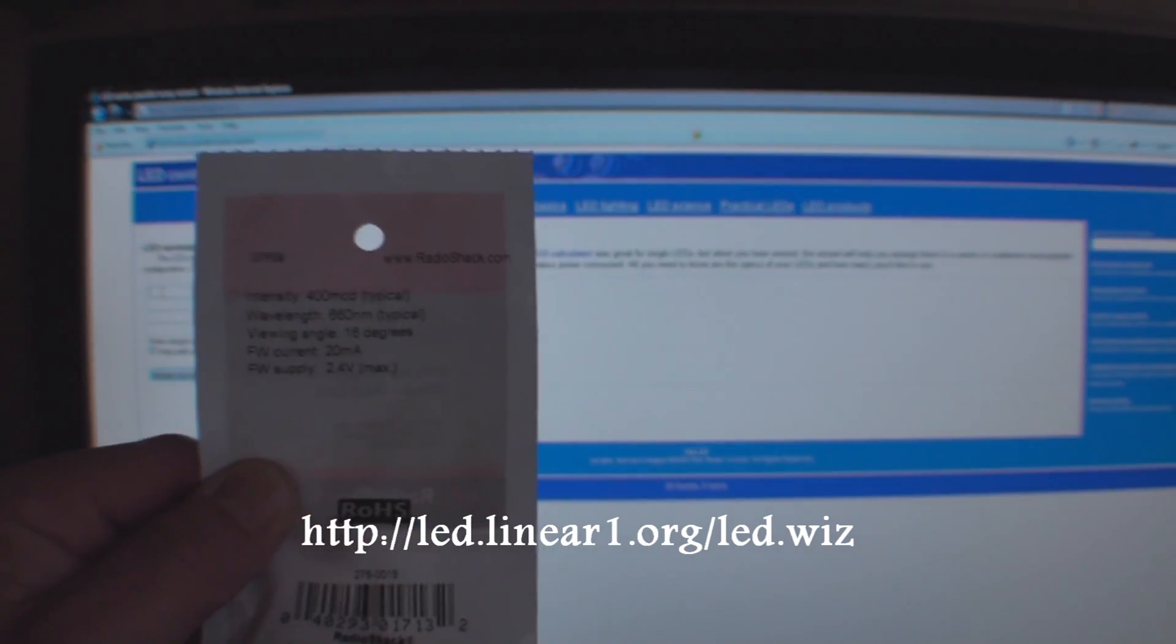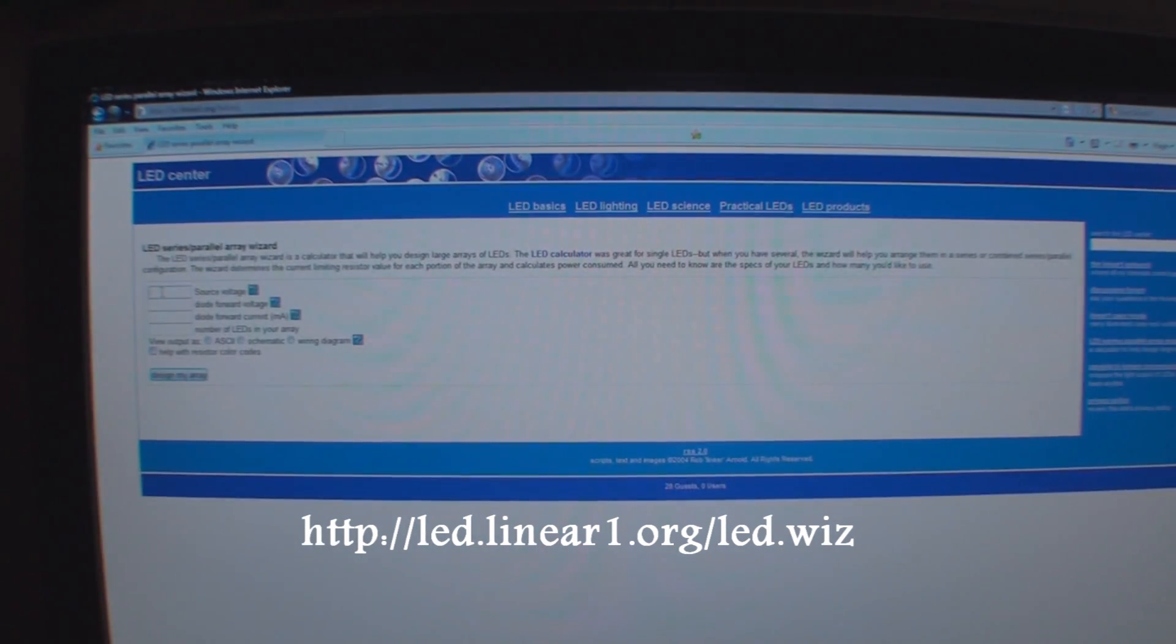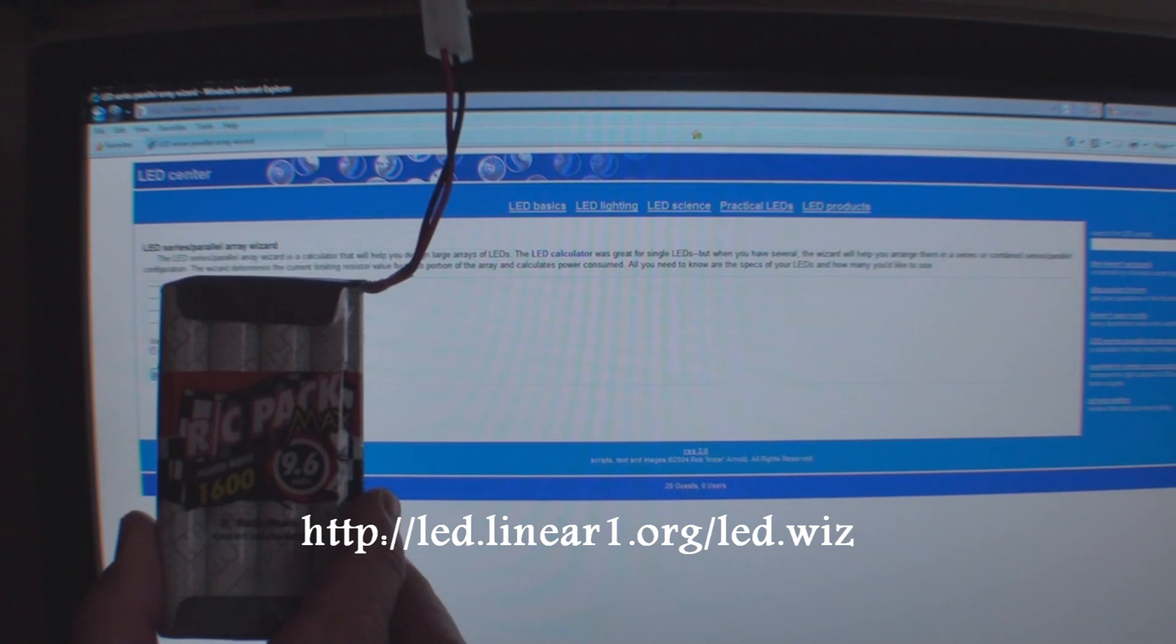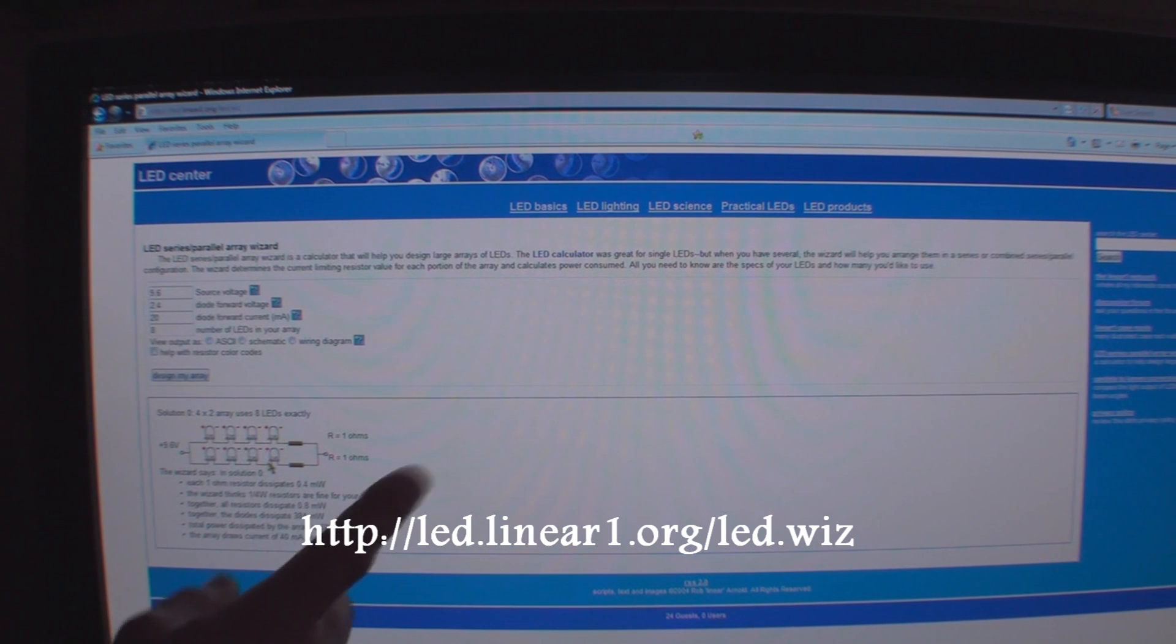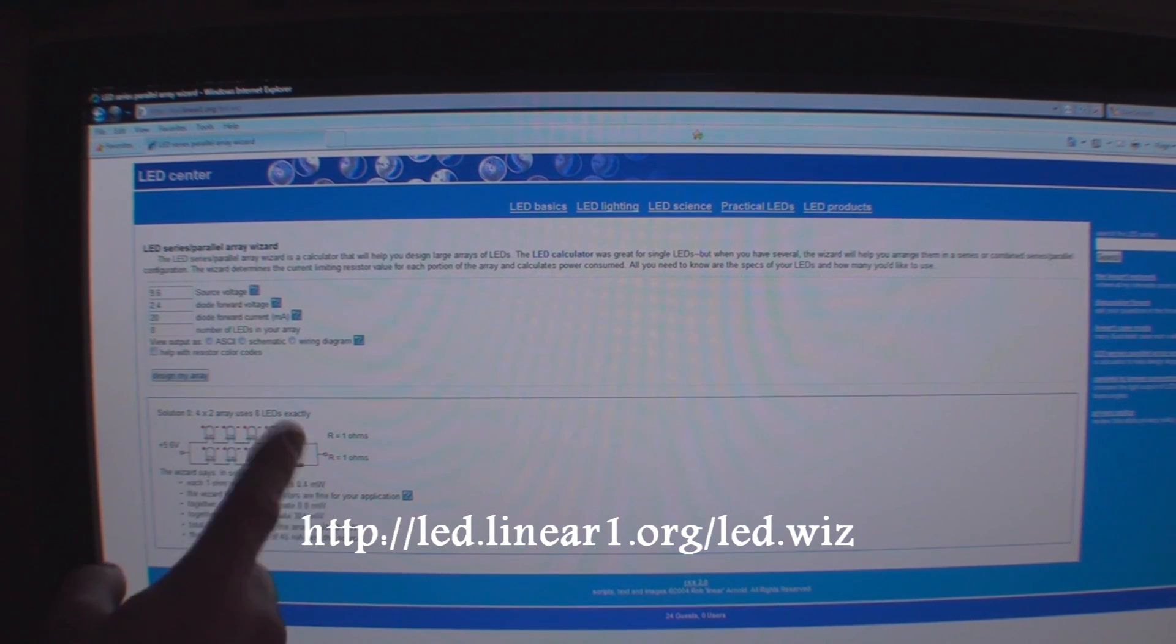So with the information on this packet, we're going to enter it into this website. So right now it's asking for the source of voltage. That's real important, because you can go with a battery pack, a 9.6 volt. We hit enter, and look at that. It's all changed. It's a little bit easier. You only need two resistors, and then you could put in a series of four lights on those two resistors.